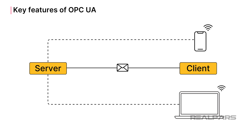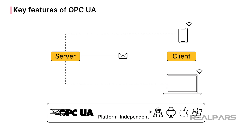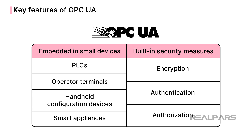OPC UA is independent of the operating system, making it truly platform independent. This allows OPC UA to be embedded in small devices such as PLCs, operator terminals, handheld configuration devices, and smart appliances. Because some of these devices are physically easy to access, security is paramount. OPC UA has built-in security measures like encryption, authentication, and authorization.